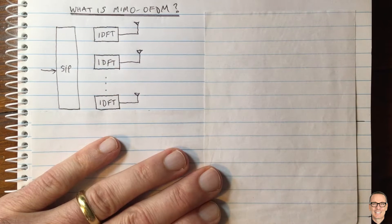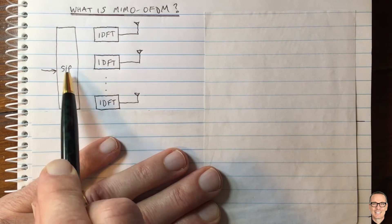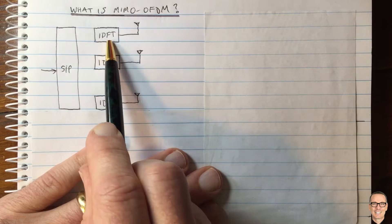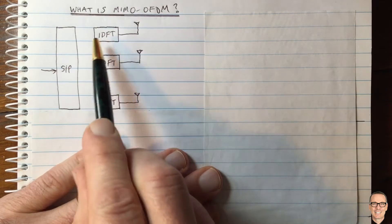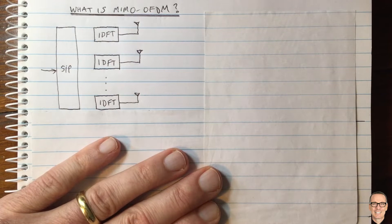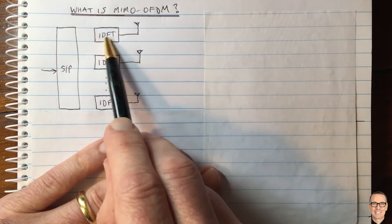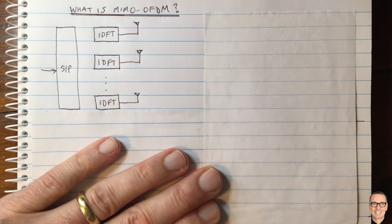Here we have our data stream coming in, being changed from serial to parallel, and then each antenna has its own inverse discrete Fourier transform — sometimes called inverse fast Fourier transform, which is just a different implementation. So if you have one OFDM modulator for each antenna, you have a version of MIMO OFDM.